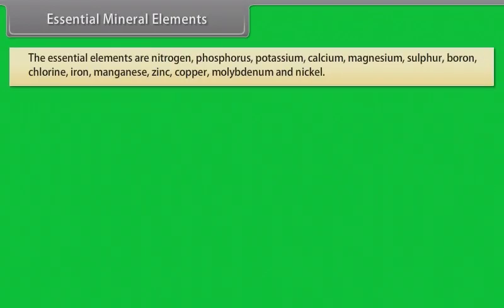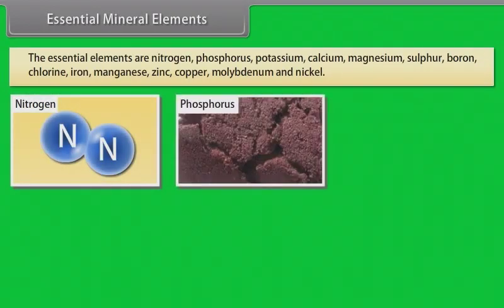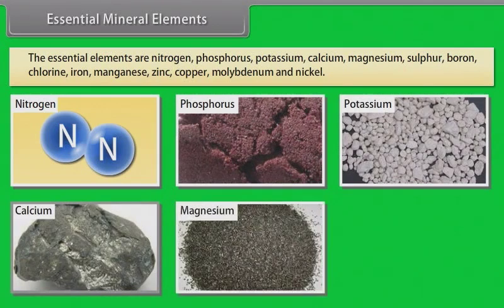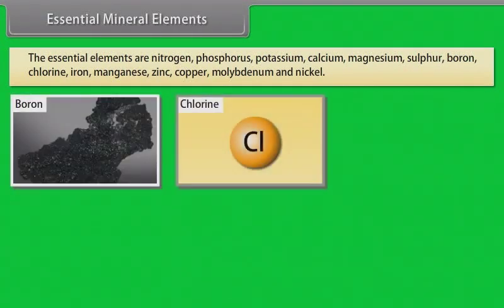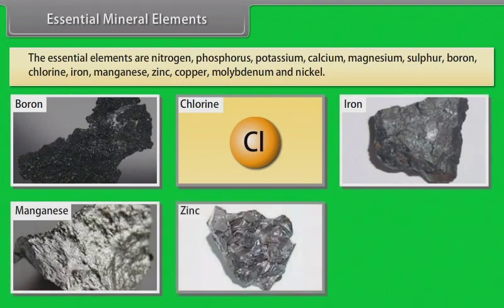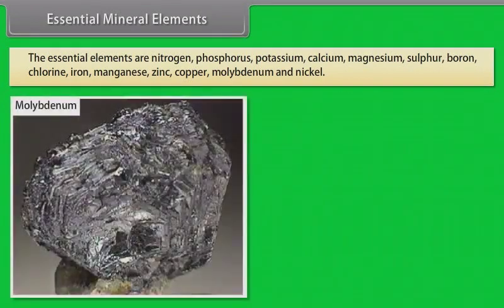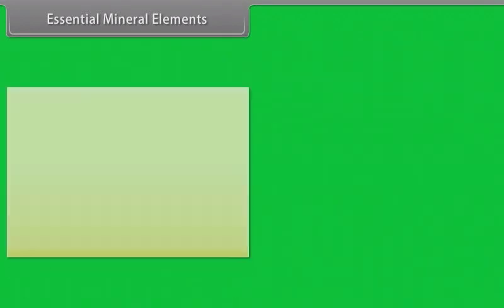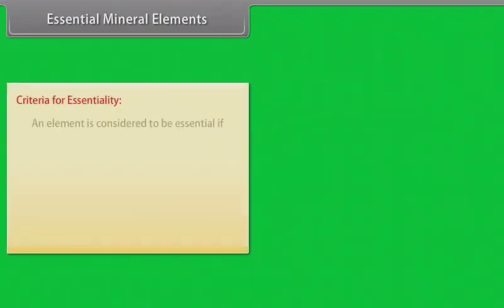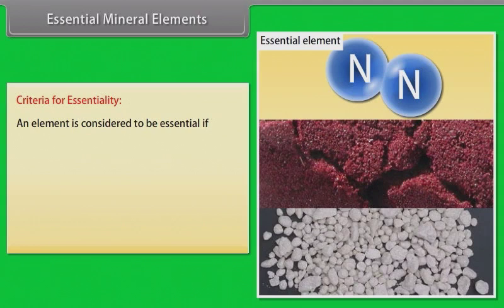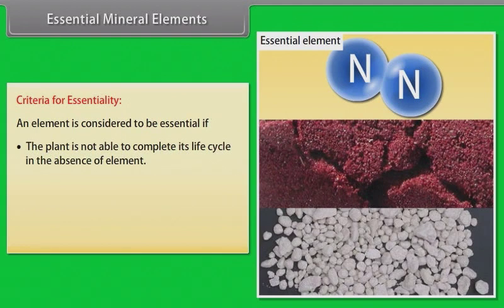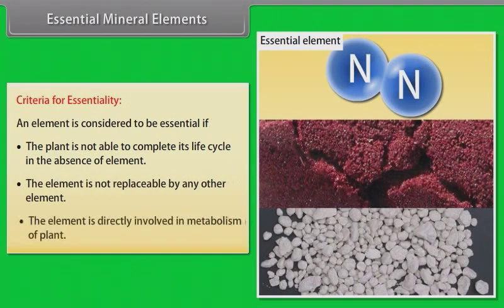Essential mineral elements. The essential elements are: Nitrogen, Phosphorus, Potassium, Calcium, Magnesium, Sulfur, Boron, Chlorine, Iron, Manganese, Zinc, Copper, Molybdenum, and Nickel. Criteria for essentiality: an element is considered to be essential if the plant is not able to complete its life cycle in the absence of that element, the element is not replaceable by any other element, and the element is directly involved in the metabolism of the plant.